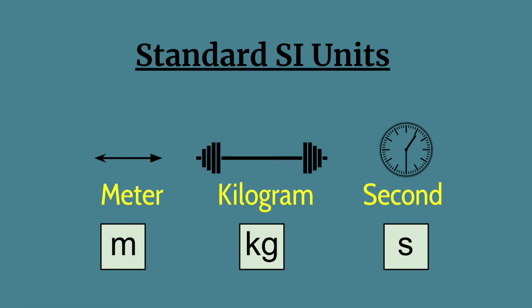In physics, there's a lot of measurements, so many units are involved. And here are some standard SI units right here for you. We have the meter, which measures length, we have the kilogram, which measures mass, and we have the second, which measures time.